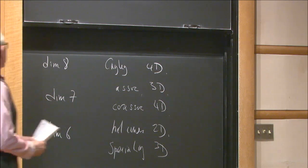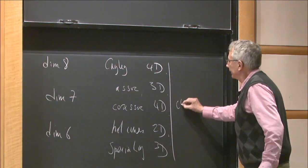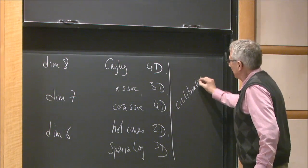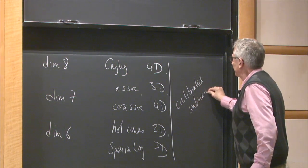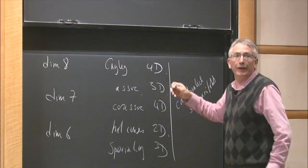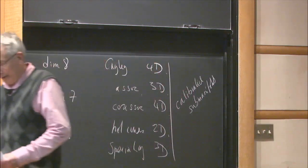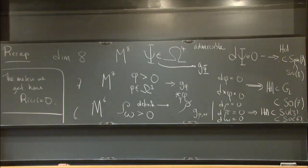All of these things have the property of being calibrated submanifolds. In particular they're minimal submanifolds and they minimize area, and in the compact situation they absolutely minimize area in their homology class.